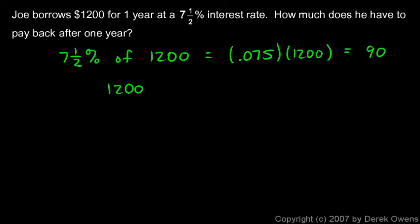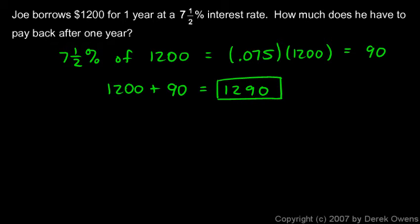At the end of one year, Joe has to pay back the original twelve hundred plus the ninety dollars in interest — that's one thousand two hundred and ninety dollars. You might ask why he would borrow if he has to pay more back. Hopefully he borrows the money and does something with it that makes a profit greater than ninety dollars — maybe he opens a lemonade stand and makes several hundred dollars profit, enough to pay back the loan and interest and still have some left over.